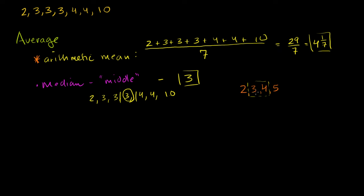And here, when you have two middle numbers, which occurs when you have an even number in your data set, there the median is halfway in between these two numbers. So in this situation, the median is going to be 3 plus 4 over 2, which is equal to 3.5.